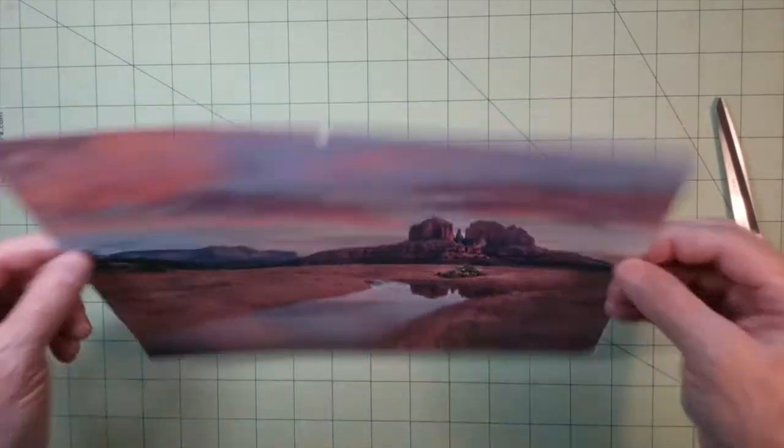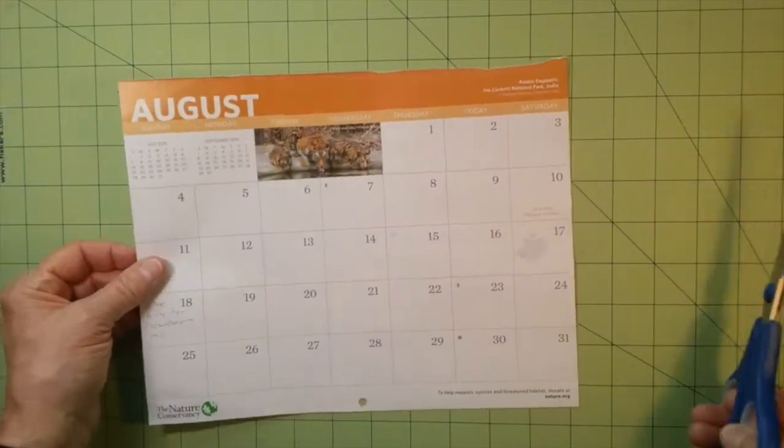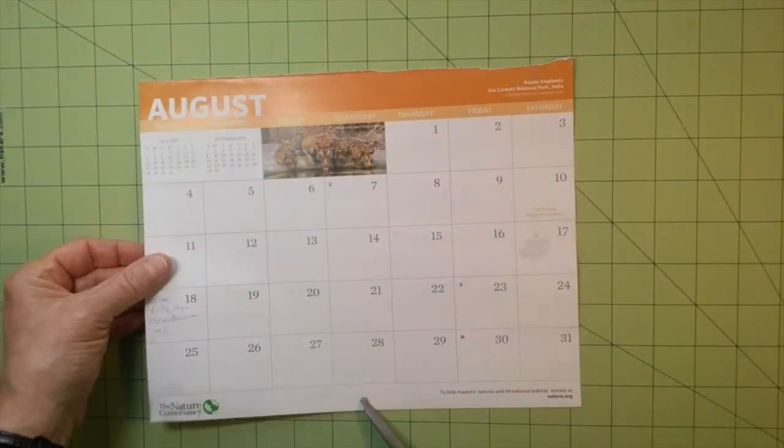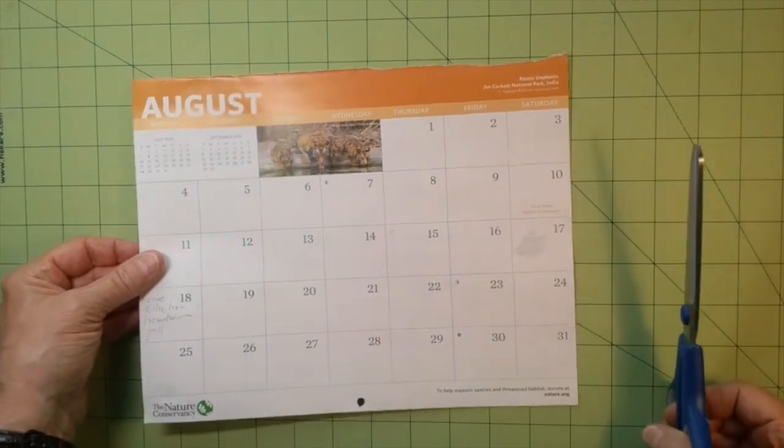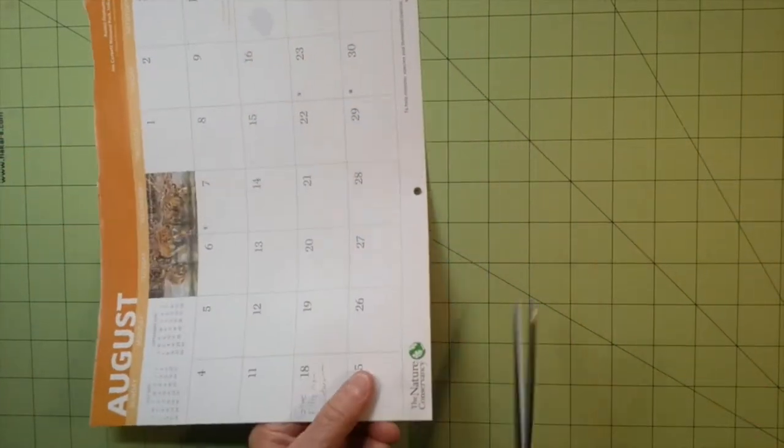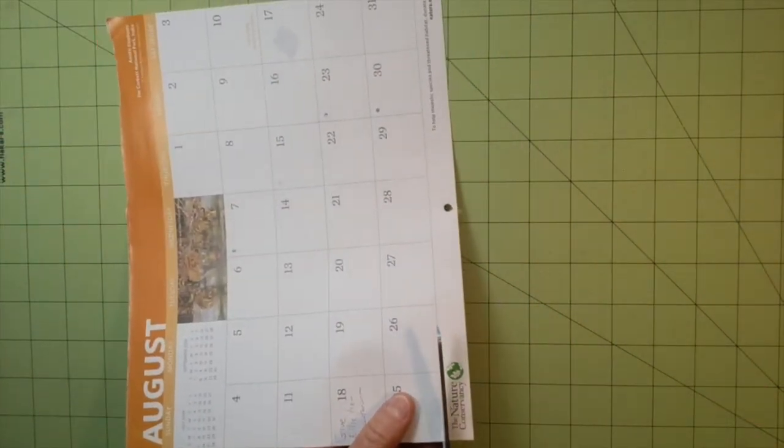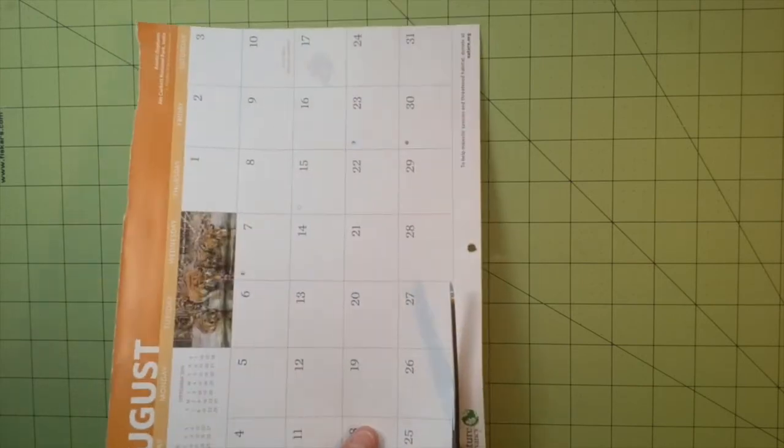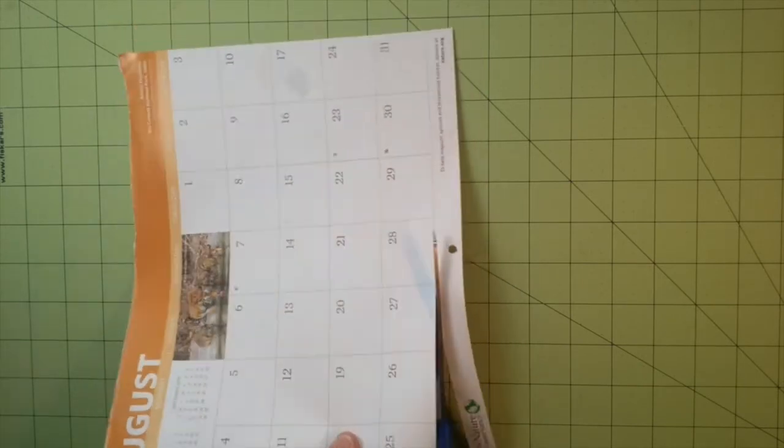There's lots of different colors. Because it has a hole on the bottom, the first thing I'm going to do is cut off the hole. I'll just use the bottom of the calendar right along this line.